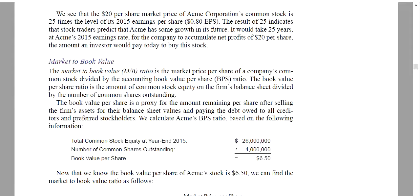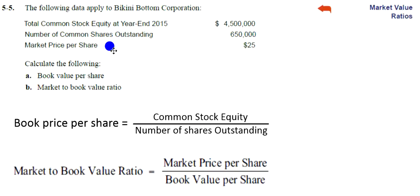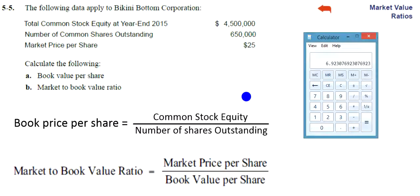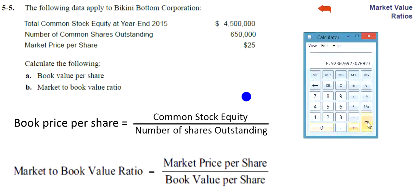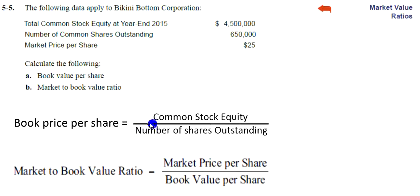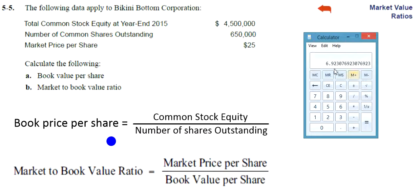Knowing that, we can jump back to our problem and say we simply want to take the common stock equity, which is $4,500,000, and divide by the number of shares outstanding — 6,500,000. That gives us the dollar amount of our book price per share, which is $6.92 per share.